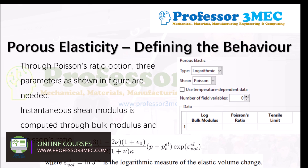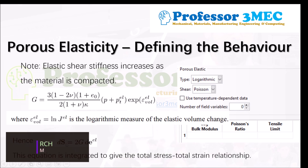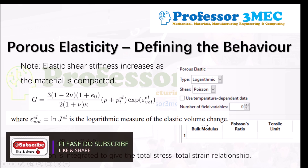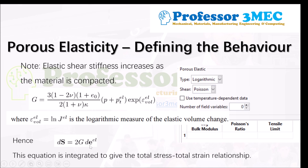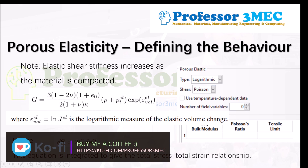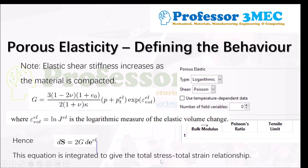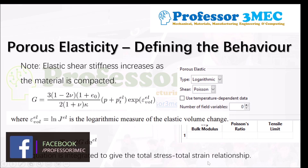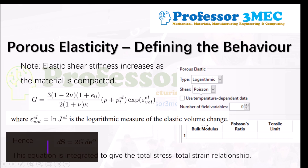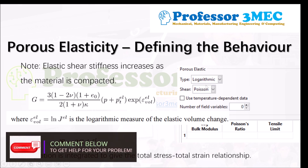If you know the shear modulus G value, you can go back to the incremental relationship: the increment of stress equals two times the shear modulus times the increment of total elastic strain. Once you integrate this equation you get the total stress in terms of total strain. This is how the whole theory works. Ultimately, you can use either option — shear modulus or Poisson's ratio — depending on which material property is available to you from experiments.